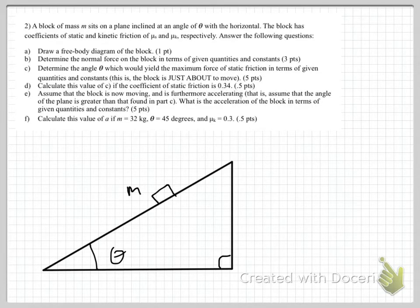This is an inclined plane example. We are given that a block of mass m sits on a plane which has been inclined to the horizontal at an angle of theta. We are also given that the coefficients of static and kinetic friction between the block and the plane are mu static and mu kinetic, respectively, and we are asked to answer the following questions.